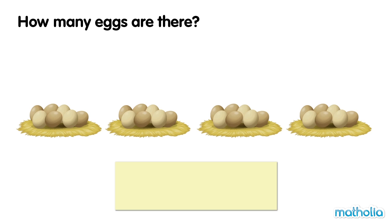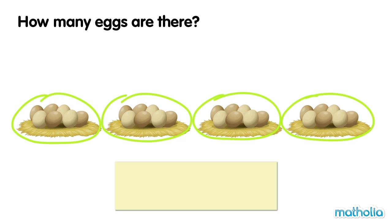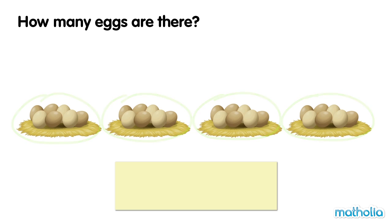How many eggs are there? There are four groups of eggs. There are seven eggs in each group. Let's count in sevens to find the total. Seven,